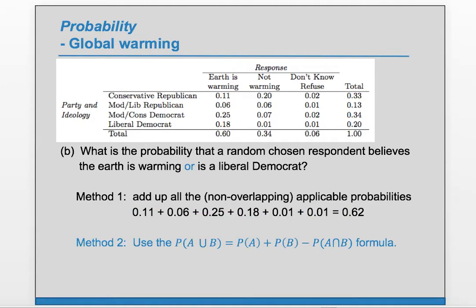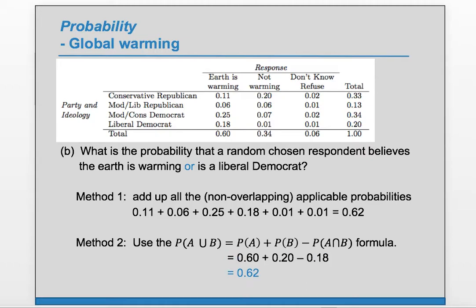Method two: we use the P(A or B) formula. P(A) is 0.6, plus P(B) which is 0.2, but we added the overlapping middle part twice, so we subtract it off once. That gives us the same answer of 0.62. Two equivalent methods.